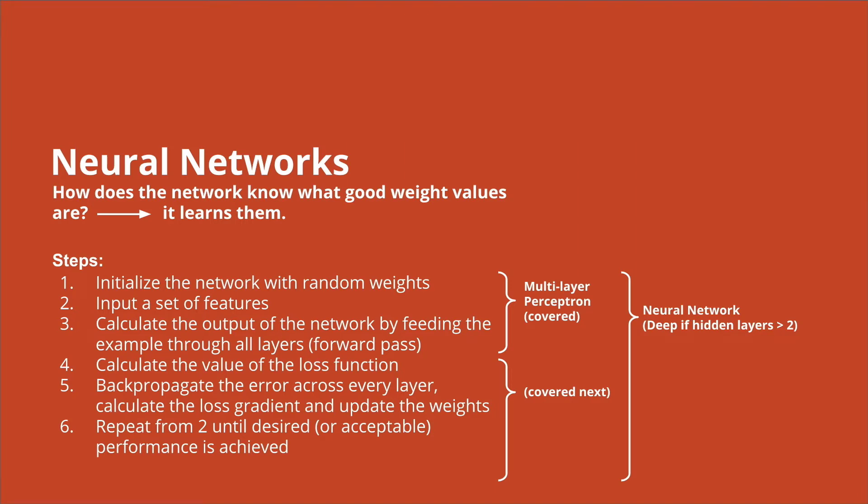Then we compare that probability with the true value of what it actually is. Because we have the true value, we can calculate the loss function for the full network. So we have a value of the loss and the performance of the network. After that, we use backpropagation in order to backpropagate all of the errors across every layer in the network. We calculate the loss gradient, and then we update all of our model parameters.